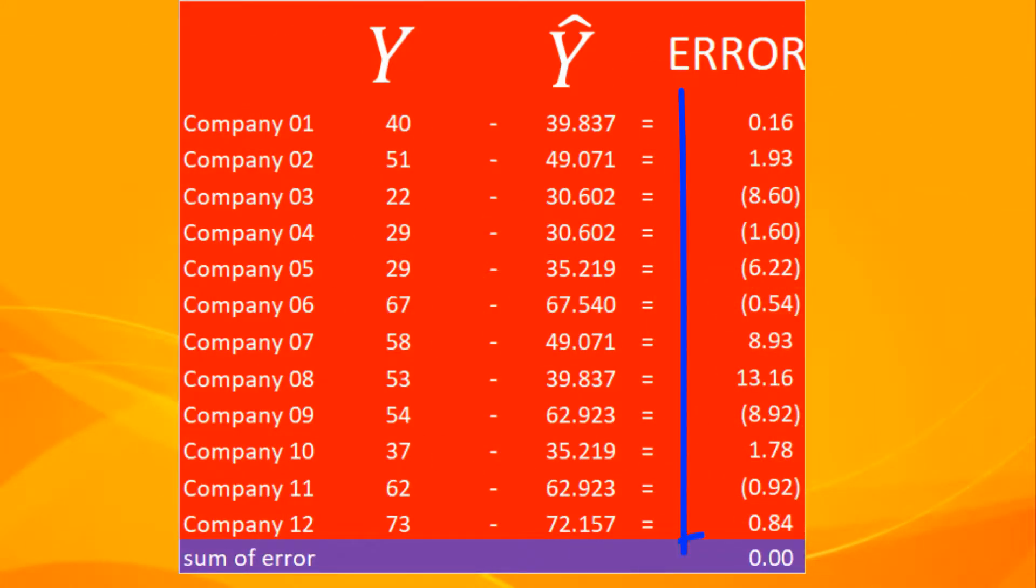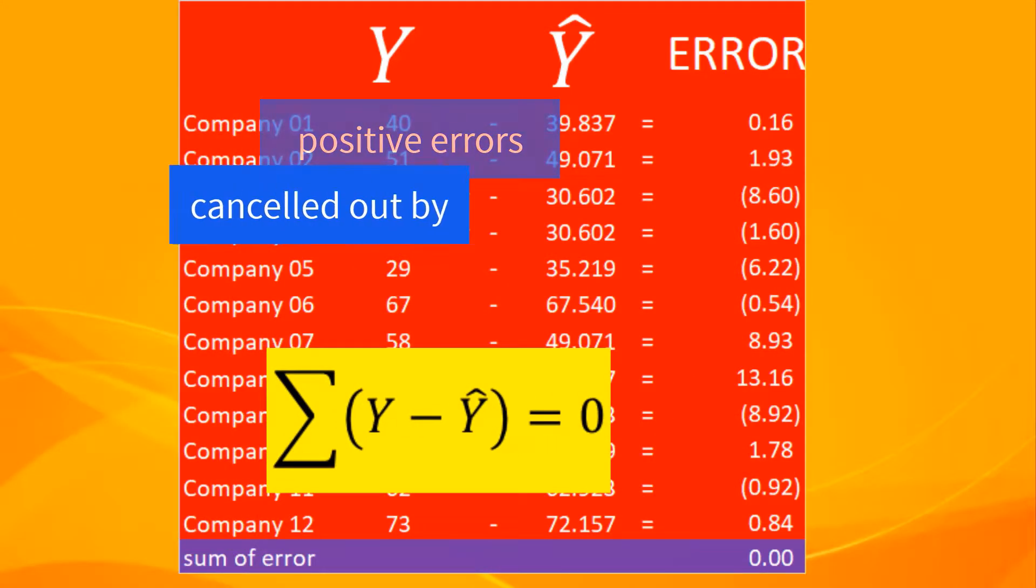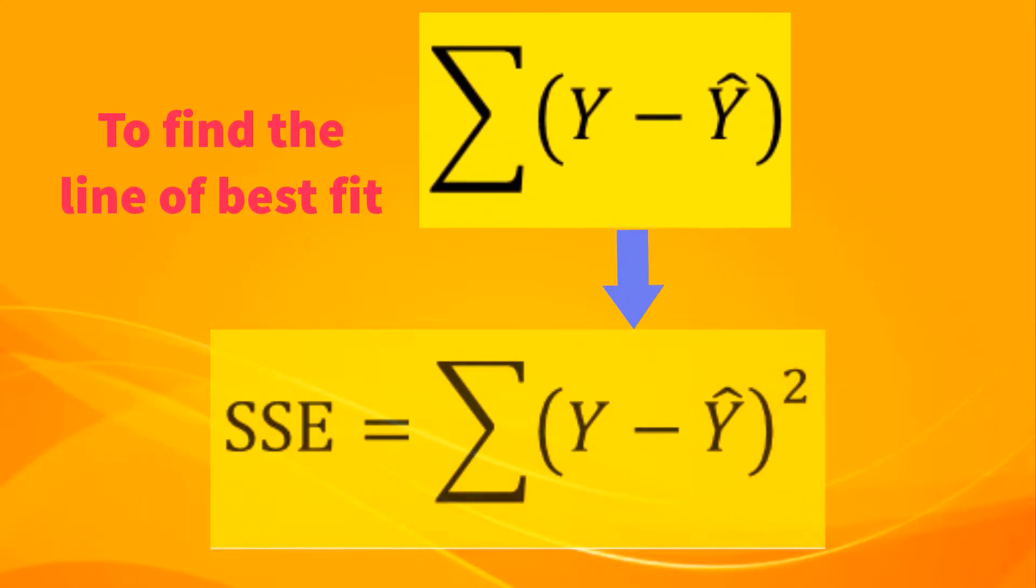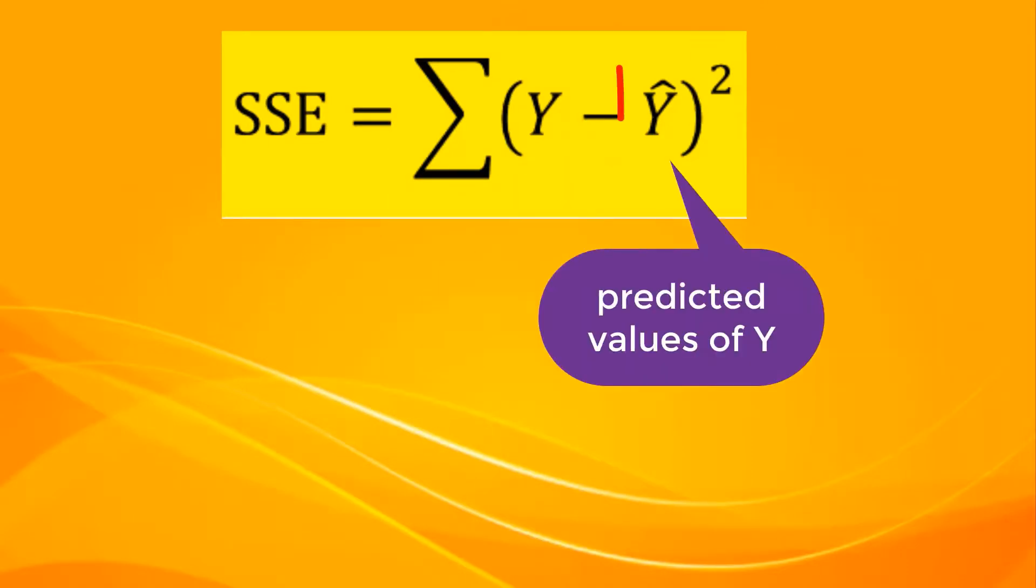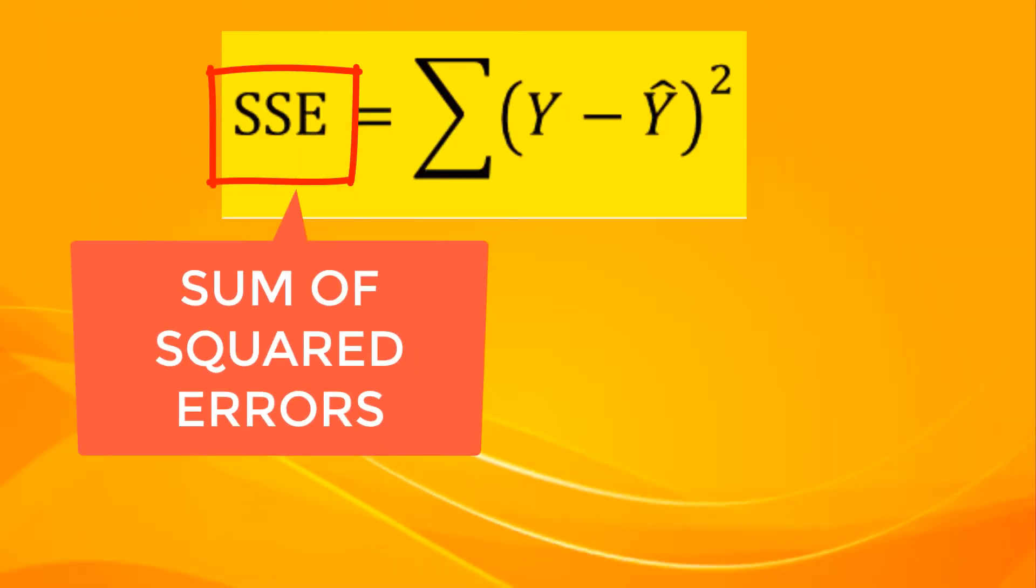These are the residuals of 12 observations. Adding all the residuals will sum up to 0 because positive errors will be cancelled out by negative errors. That's why, to find the line of best fit, we instead minimize the sum of squared residuals. The sum of squared differences between actual values and predicted values of dependent variable is called SSE or sum of squared errors.